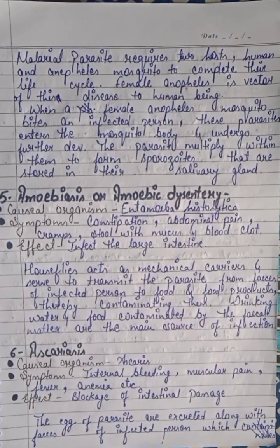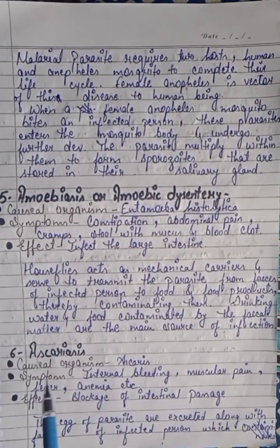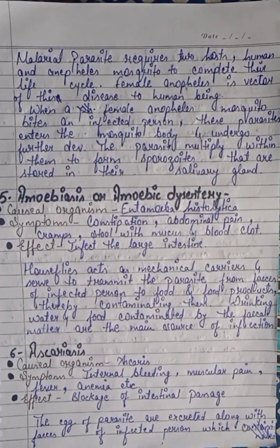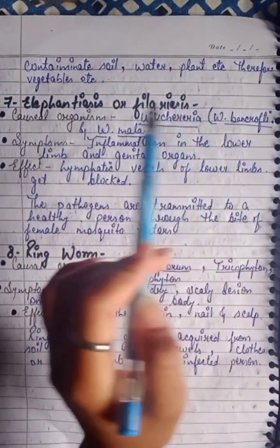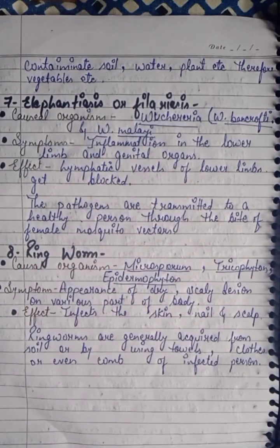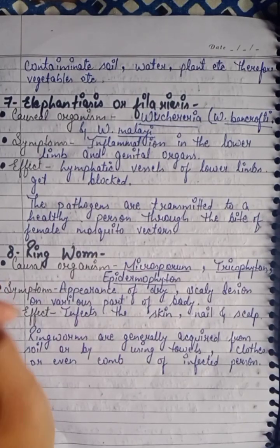Drinking water and food contaminated by fecal matter are the main sources of infection. Sixth is Ascariasis. The causal organism is Ascaris. Symptoms include internal bleeding, pain, fever, and anemia. The effect is blockage of the intestinal passage. The eggs of the parasite are excreted along with the feces of an infected person, contaminating soil, water, and plants.